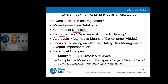Another significant change is what we call AltMoc — an alternative means of compliance. In the regulatory structure you have implementing regulations, then acceptable means of compliance and general guidance material. The acceptable means of compliance is where we can apply to the competent authority and use a different mechanism to meet the requirement and satisfy the intention of the implementing regulation. These are classified as alternative means of compliance, and they need to be approved by the competent authority and form the basis of your approval.